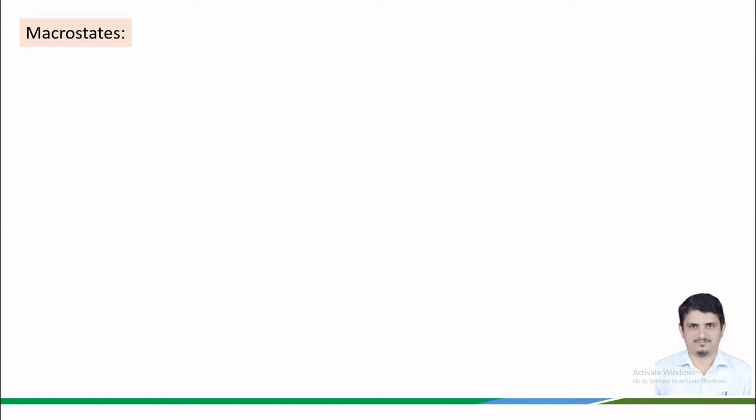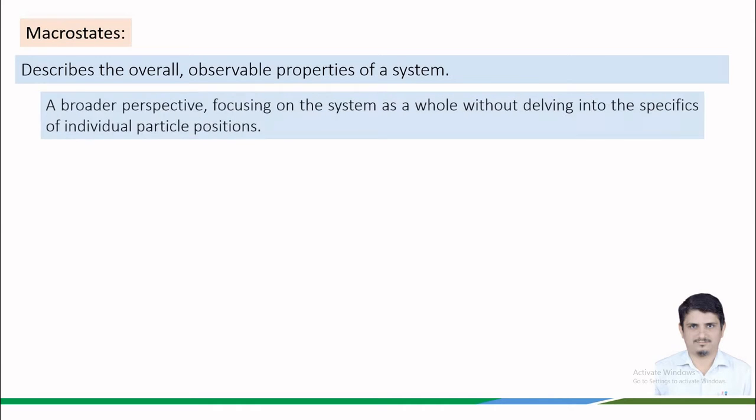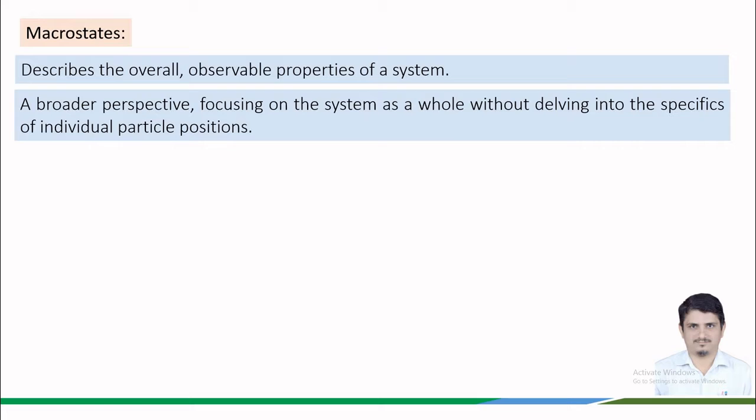Now, let us contrast this with macrostates. A macrostate is a description of the system in terms of observable microscopic properties. It is a broader perspective focusing on the system as a whole without going into the specifics of individual particle positions.